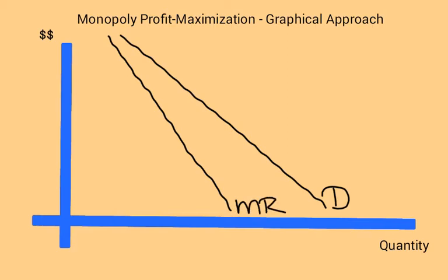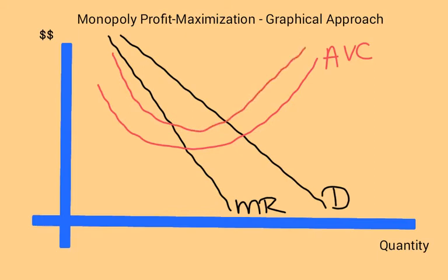Now let's graph the average and marginal cost curves. So let's say that for this monopolist, the average variable cost curve is here. And then the average total cost curve is going to be above it, because average total also includes fixed costs. So there's the average total cost.